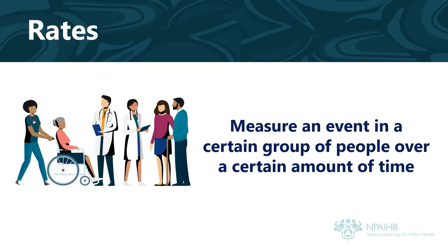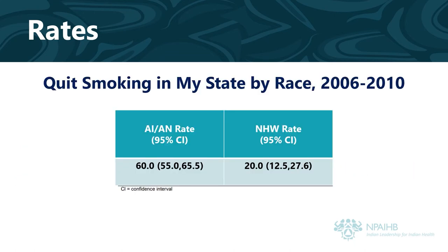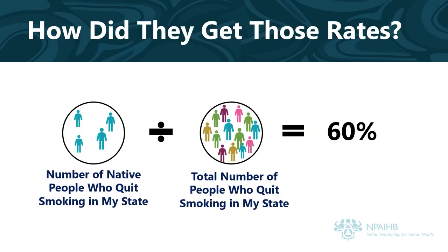Rates measure an event in a certain group of people over a certain amount of time. For example, the chart below describes the rates of people who quit smoking in my state by race from 2006 through 2010. Note that NHW is an abbreviation for non-Hispanic white. As you can see, 60% of the people who stopped smoking in my state from 2006 through 2010 were native, and 20% were white. To get the native rate, they divided the number of native people who quit smoking from 2006 through 2010 by the total number of people in my state who quit smoking during that period, getting 60%.